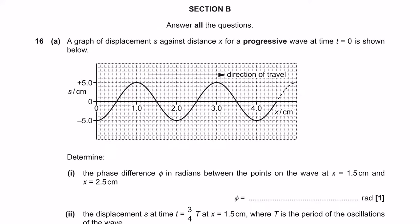For 16A, the question says: a graph of displacement S against distance X for a progressive wave starting at t equals 0 is shown below. For the first part, we need to determine the phase difference phi in radians between the points on the wave at X equals 1.5 centimetres and 2.5 centimetres.